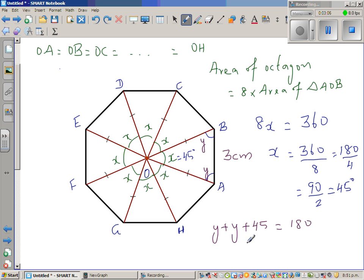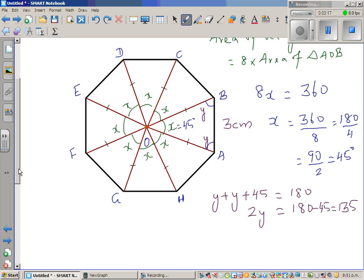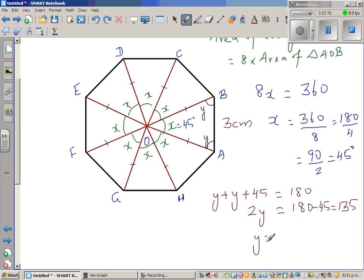So 2Y is, 2Y is 180 minus 45, which is 135. So Y is 67.5 degrees. So I can say this angle, put these angles up, 67.5 degrees.